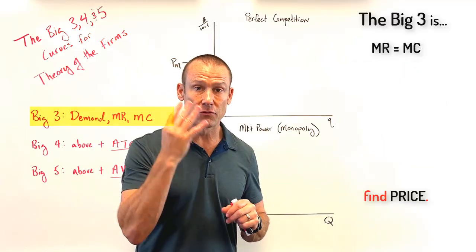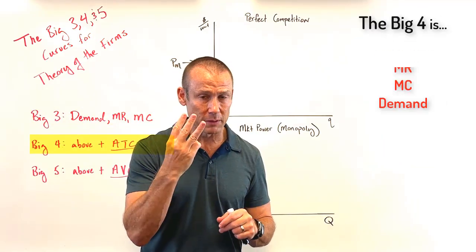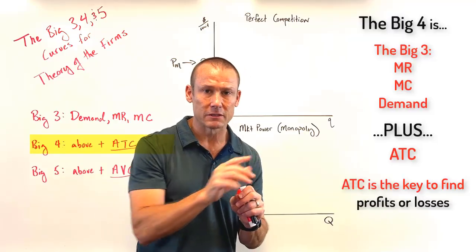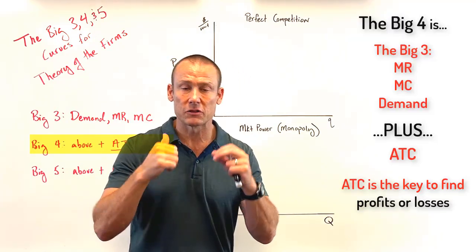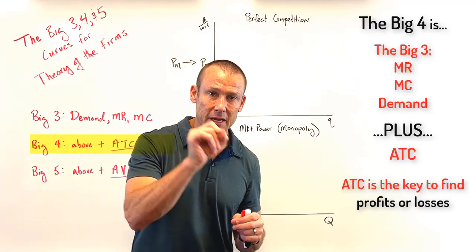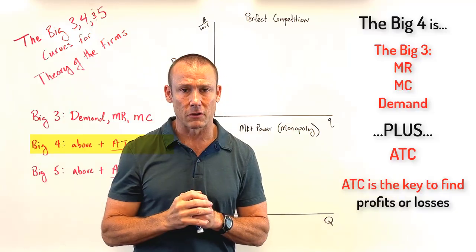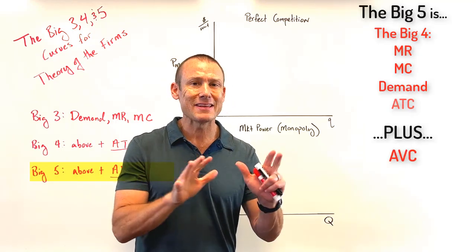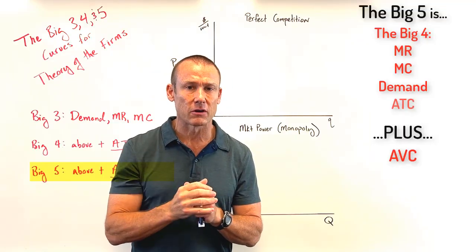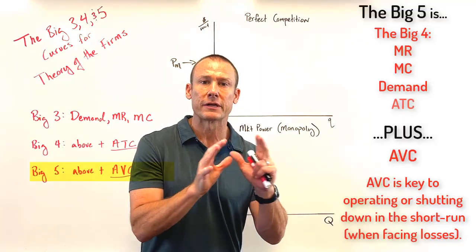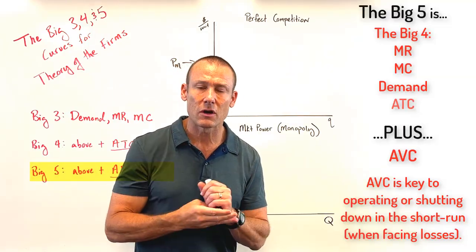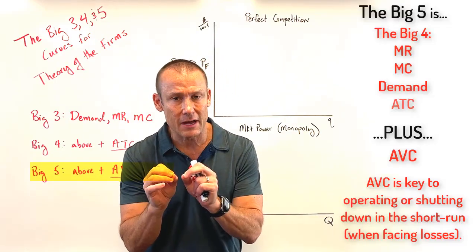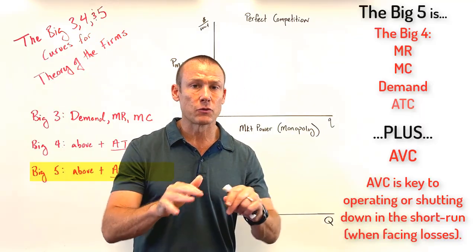The big four is just the big three — finding price and output — plus ATC. You need ATC when you're asked about profit or loss. To find profit or loss, you need those big three plus ATC. ATC is the key to finding profit and loss. Then the big five is the big four plus AVC. You only need AVC if a firm is currently incurring losses, because AVC is the key to determining whether a firm should shut down or operate in the short run.